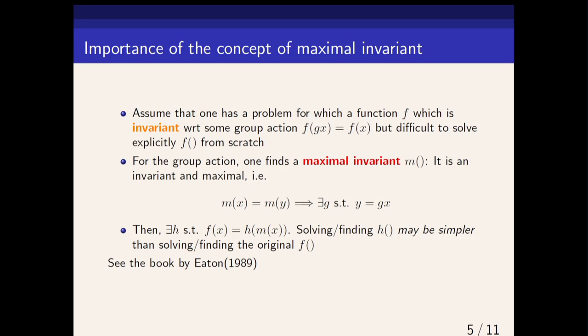If I look at the orbit of a value from the group action g, I will partition my space into orbits. If all orbits have different values, then I will say that this is a maximal invariant. The key theorem of Eaton with a short half-page proof is to show that any invariant function is a function of a maximal invariant.